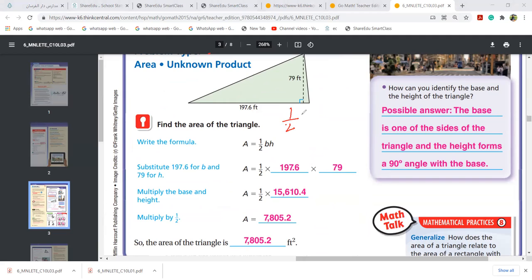Half BH. Base, height, and height. What is base here? What is base here? 79 or 197? 197.6. And then what is height? 79. So what I am doing? I have to multiply all. First multiply these two numbers and then divide it by 2 because it is half of this number.